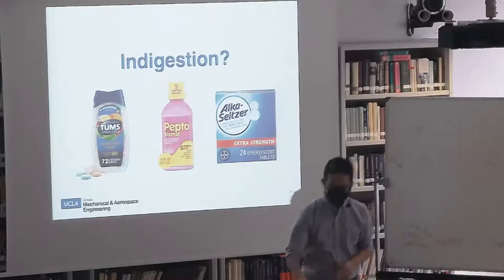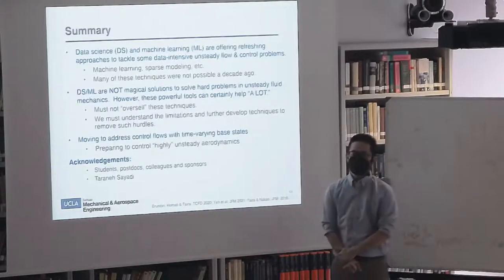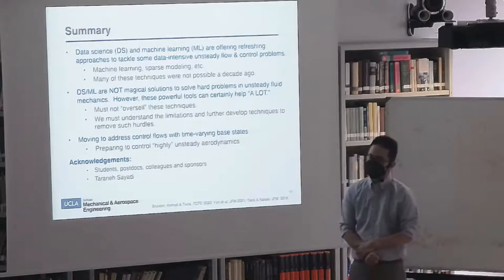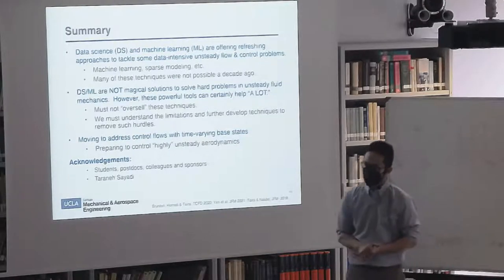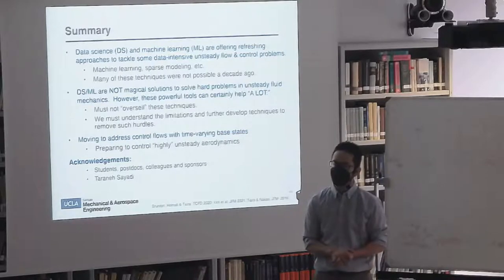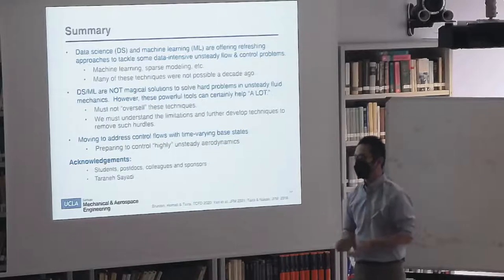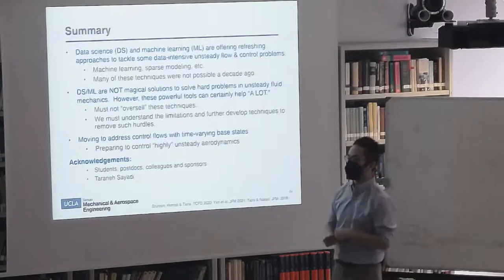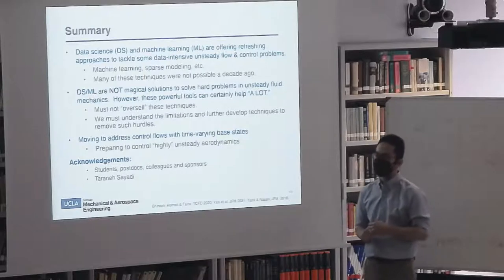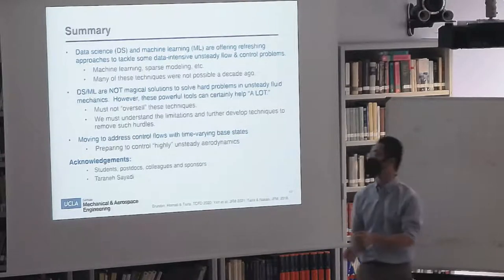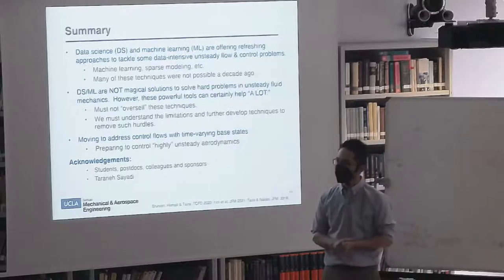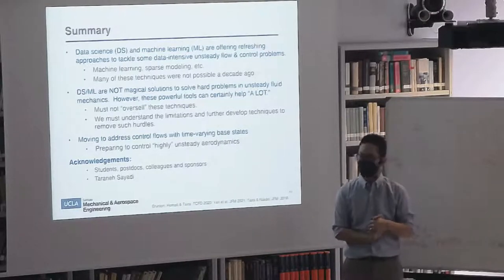Q: For the randomized numerical linear algebra, the main problem in large codes is creating the operators since we don't have access to the full operator. To create the rows of the B matrix, do you still need the full operator or just the operation of the operator? A: You need the operation of the operator — you don't have to formally build the operator at all. Sometimes, depending on the algorithm, you might need the adjoint or a transpose, but you don't need to save the operator. That's very handy.